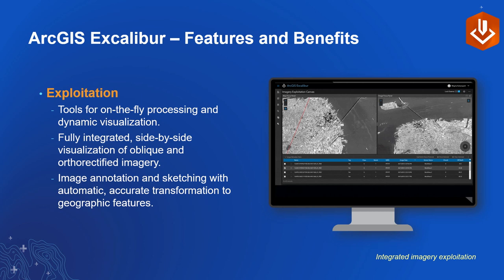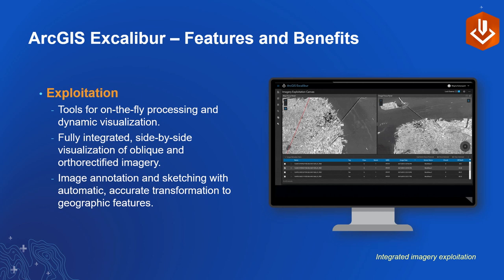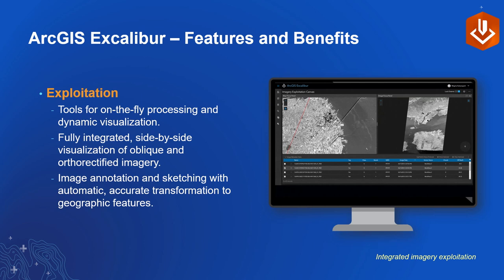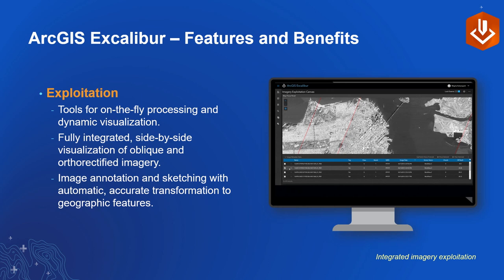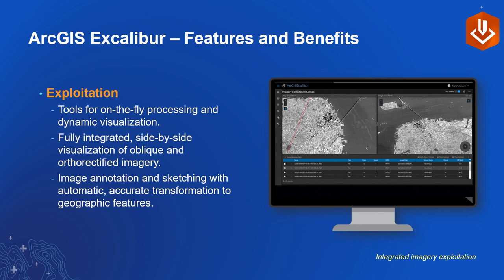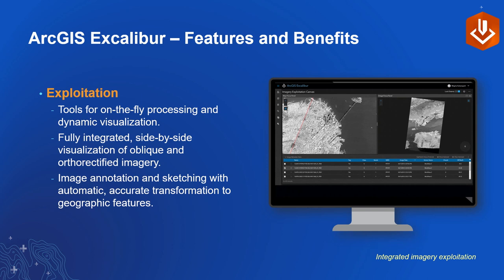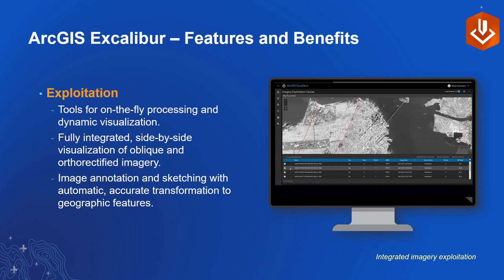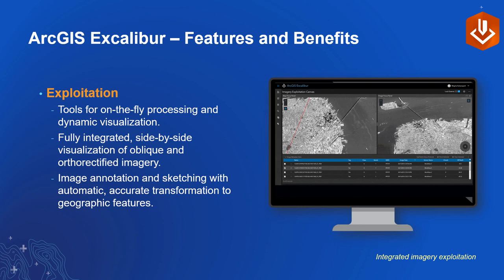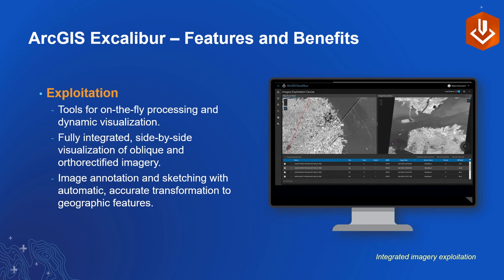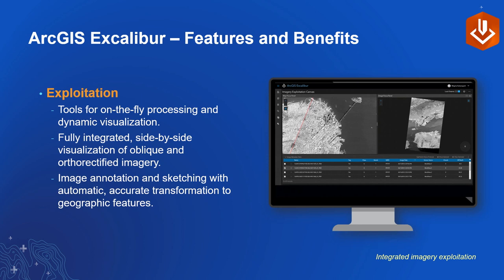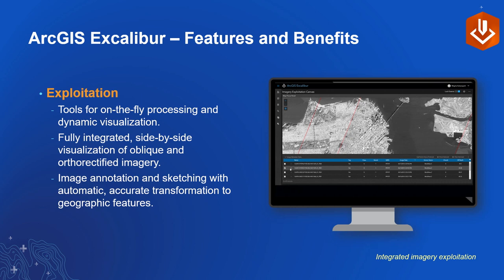For exploitation, we have tools for on-the-fly processing and dynamic visualization, including side-by-side visualization of oblique and orthorectified imagery. This is really where the two tradecrafts start to meet. Imagery analysts are used to looking at oblique imagery, but they also need contextual reference — some type of mapping product to figure out where they are. In Excalibur, we have the ability to look at oblique imagery alongside geospatial context. We also support image annotation — marking up imagery either as simple graphics or as a feature service written into a database.